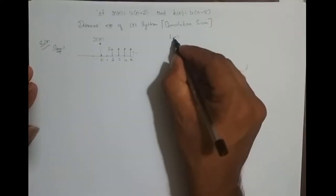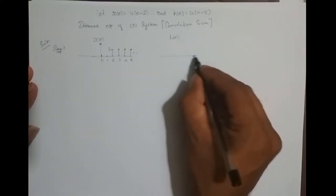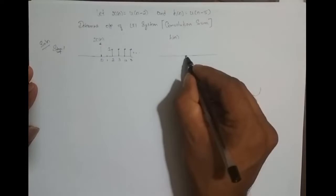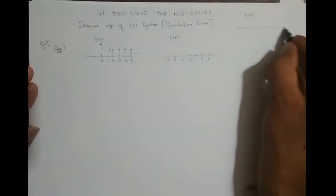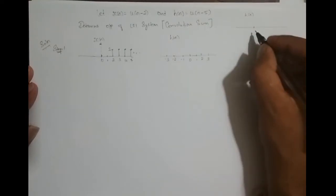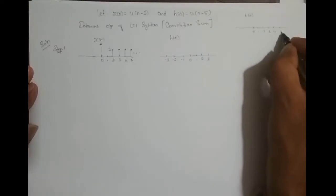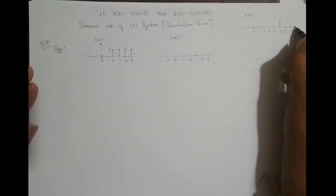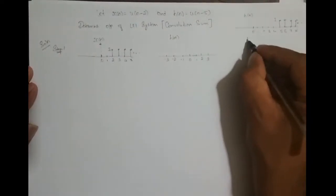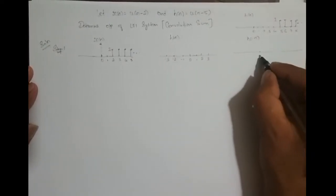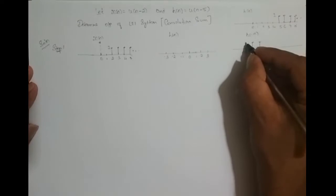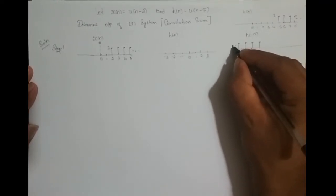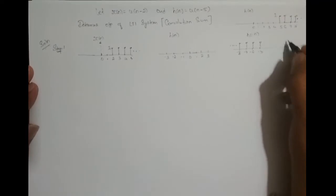Now, what is h(-n)? h(n) is u(n) shifted right 5 times, so it starts from 5 and goes to infinity. h(-n) is the mirror image of h(n), so it starts from -5, -6, -7, -8 and goes till minus infinity.